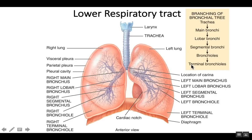Terminal bronchioles are still part of the conduction zone; therefore we cannot do any gas exchange through any of these structures. But air from the terminal bronchioles then goes to a respiratory bronchiole, and we're going to see why a respiratory bronchiole allows gas exchange — it's because they actually have little outpouches of alveoli.